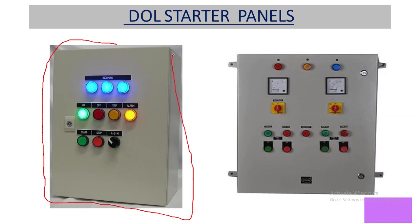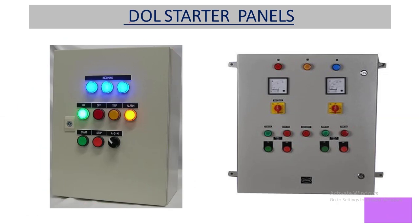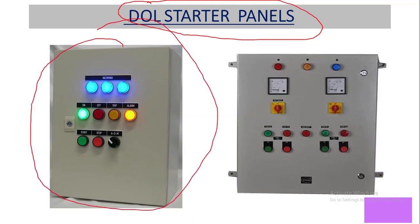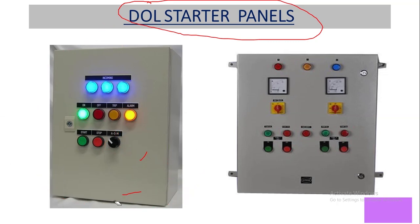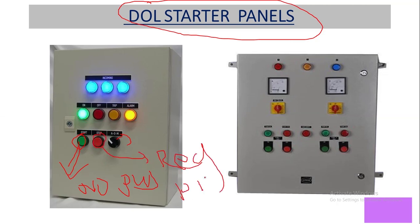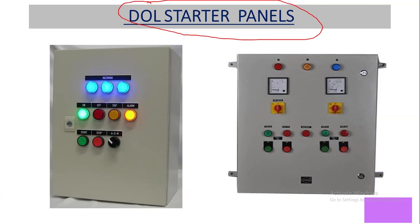This is the view of the DOL starter panel. It has a three-position selector switch with options: Auto, Off, and Manual. In manual mode, we can start the motor using the green NO push button and stop it using the red NC (normally closed) push button.